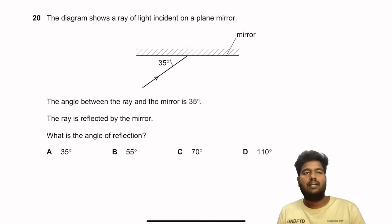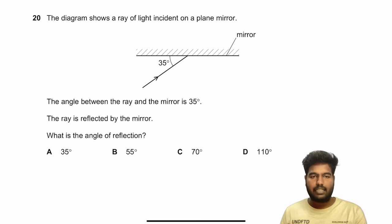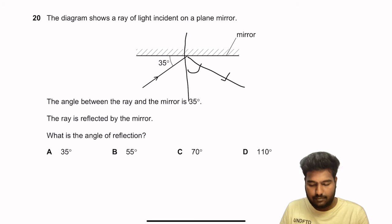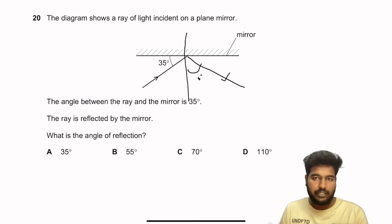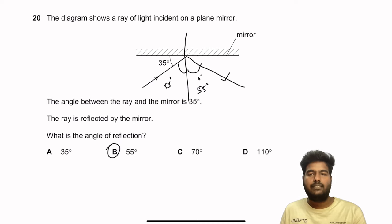Question 20: A ray of light is incident on a plane mirror. The angle between the ray and the mirror surface is 35°. The angle of incidence is measured from the normal, which is 90° − 35° = 55°. By the law of reflection, angle of incidence equals angle of reflection, so the angle of reflection is also 55°.